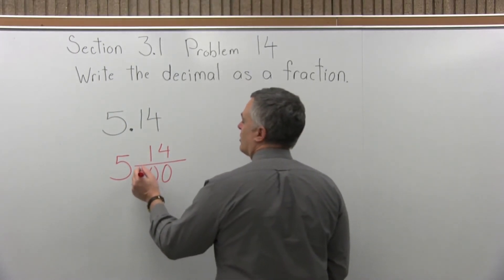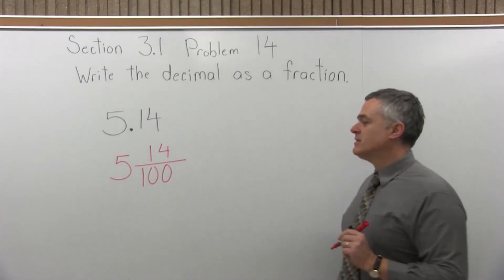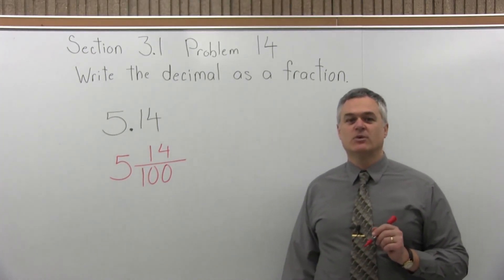Step three, put a 1 in front of the bottom zeros. So I have 5 and 14 one-hundredths.